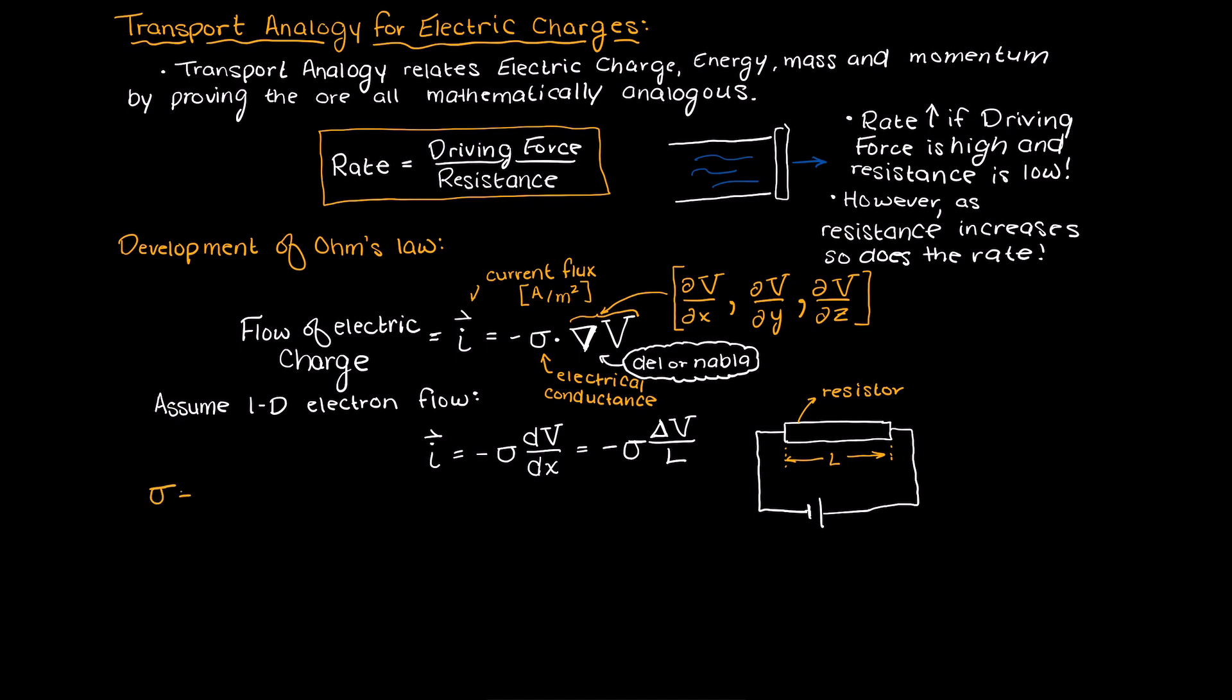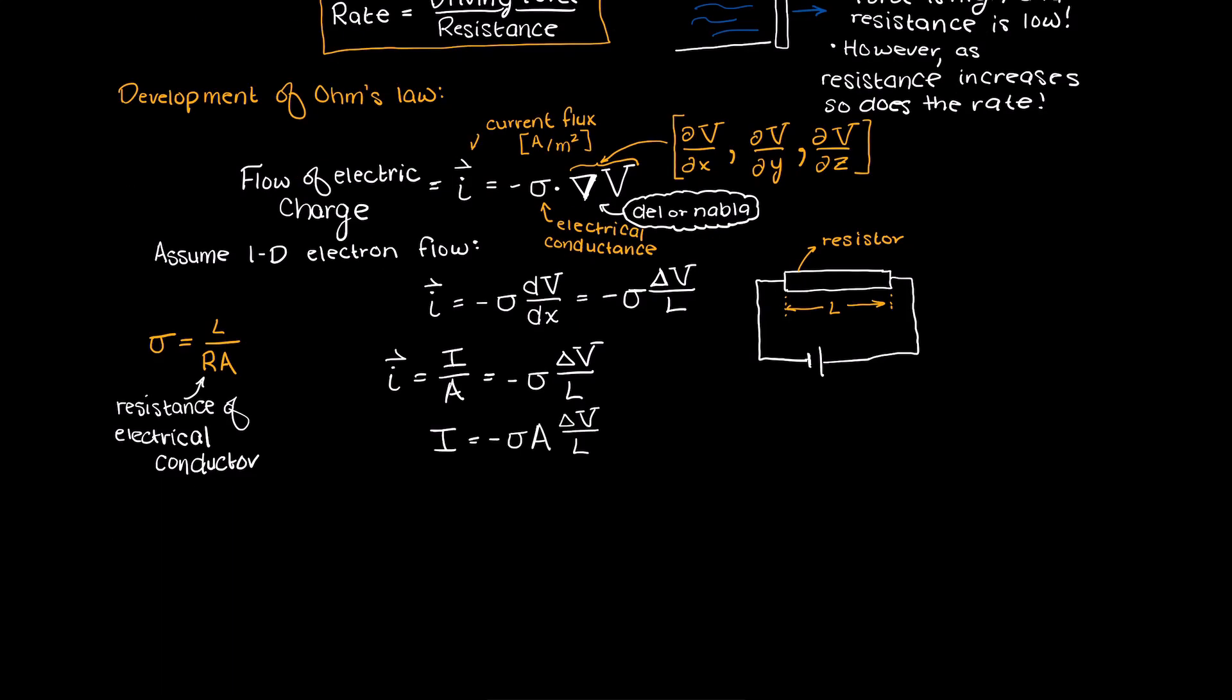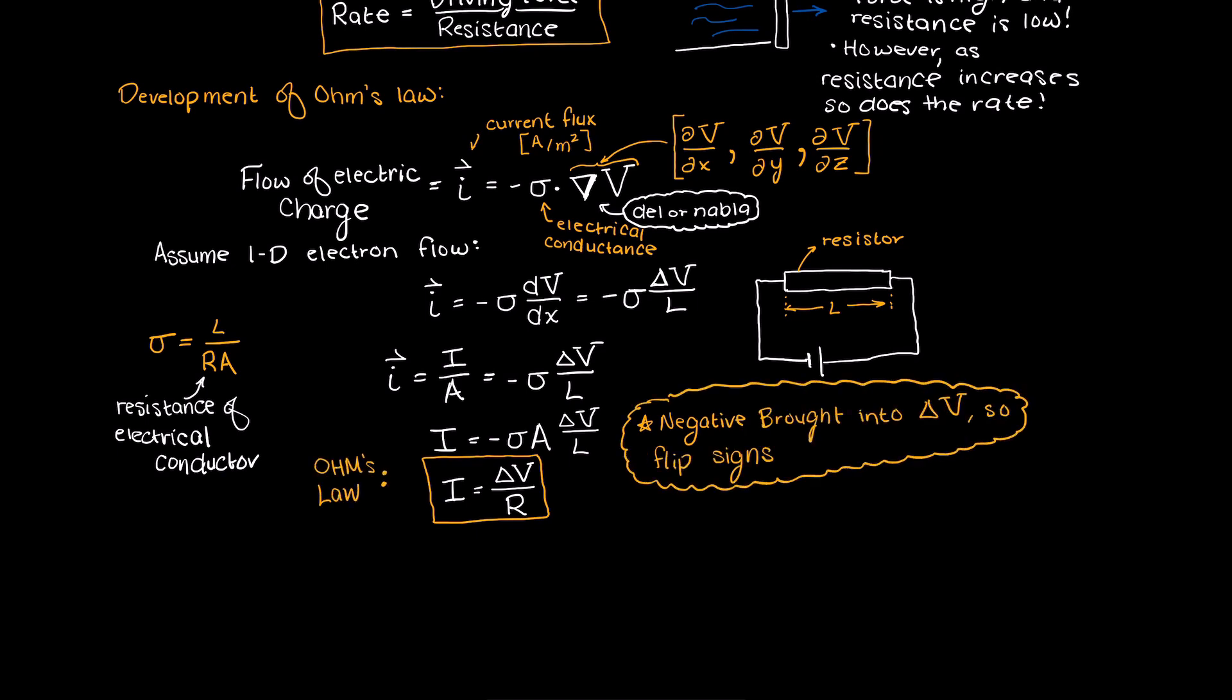Lastly, we achieve the famous Ohm's law equation by recognizing that the electrical conductance is equal to this formula here. So you can verify that easily on your own if you want to. Anyways, as you can see here, we clearly have a driving force, the voltage change, which I like to think of as pressure in a pipe. It will force the electrons through, which is obviously a driving force.